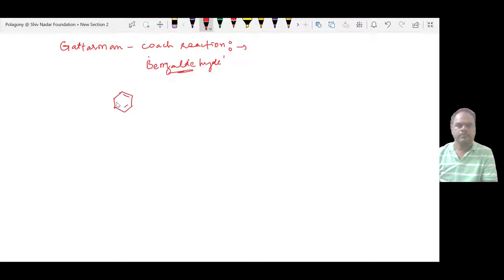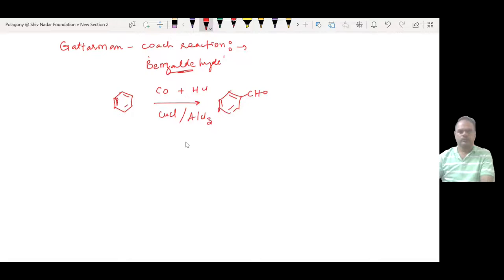The raw material is benzene, which is converted into benzaldehyde in the presence of carbon monoxide and HCl, with CuCl or AlCl3 as catalyst. Let's look into the mechanism of this reaction.